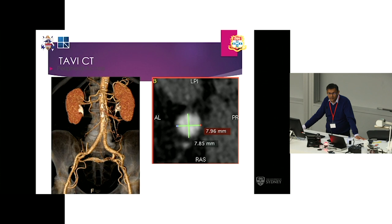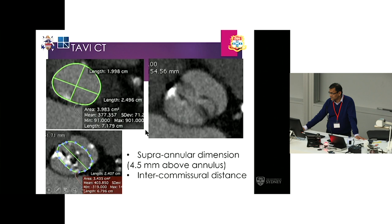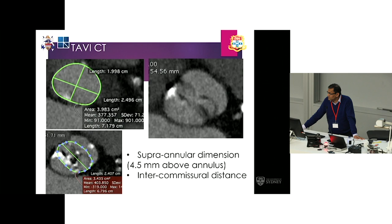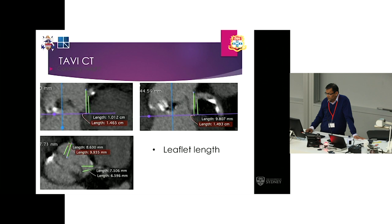The TAVI CT scan showed she had adequate access for a transfemoral approach. For the pundits on the panel, they'll notice that this is indeed a bicuspid valve — a type 0 bicuspid valve — on which there is less data available. The operators have appropriately done annular sizing measurements and also looked at supra-annular measurements, including the intercommissural distance and an annular dimension about 4mm above the true annulus. They've taken note of the coronary heights, which were adequate, and measured the bulkiness and size of the cusps to exclude the risk of coronary occlusion.